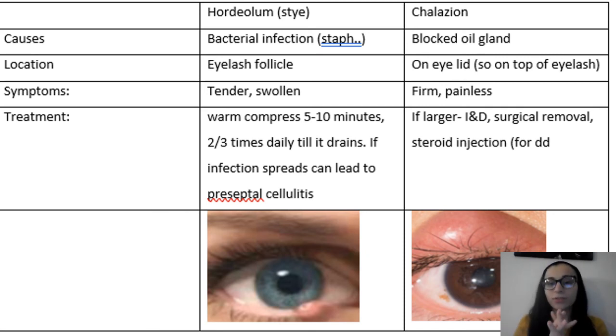Next we go on to compare it to chalazion, which is a blocked oil gland. The difference between this is that a stye is going to be by the eyelash follicle, so just think about exactly where the eyelashes are. And this is going to be on the eyelid, so it's going to be on top of the eyelash. It's going to be firm and painless. And if it's large, you might need incision and drainage, surgical removal, or steroid injection.